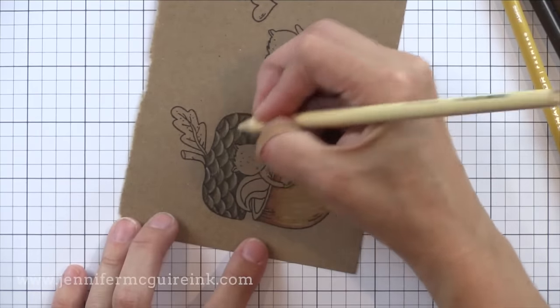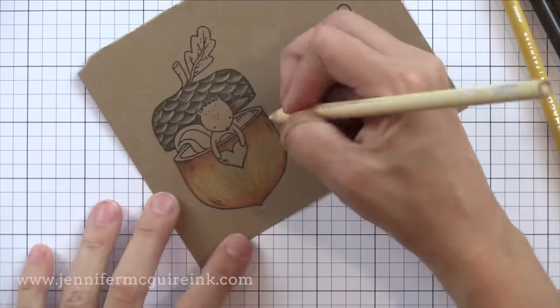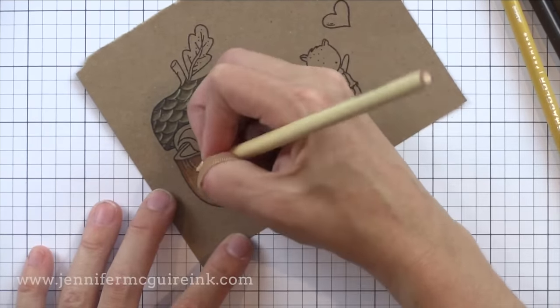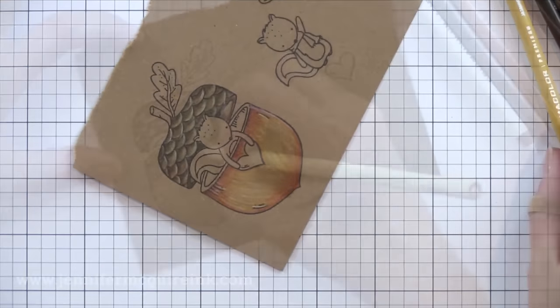Now this is the most important part of the coloring. You want to come in with a super light color or a white colored pencil and add highlights here and there. This really makes it pop against that craft background.